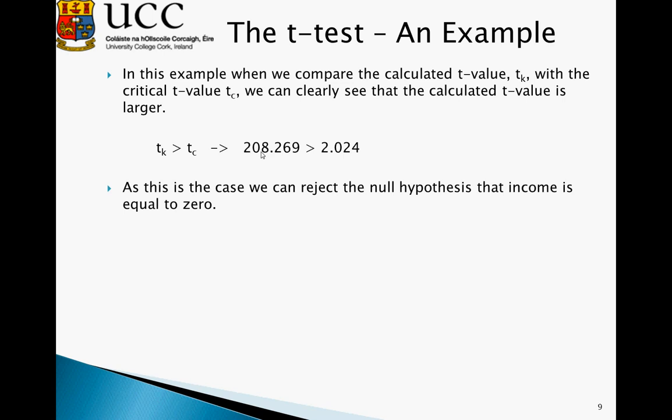As this is the case, we can reject the null hypothesis that income is equal to 0, and we conclude that income, the coefficient of 0.7694, is significantly different from 0, and say that income has an impact on consumption.